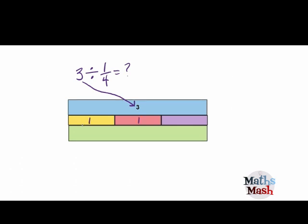So we'll put the ones in there. And each one is going to be broken up into 4 pieces. Why? Because we're dividing by 1 quarter. So we're going to have 4 one-quarters in each of these boxes.